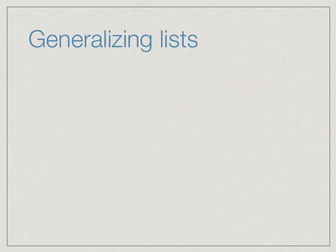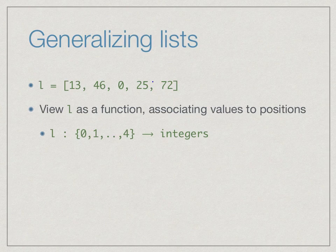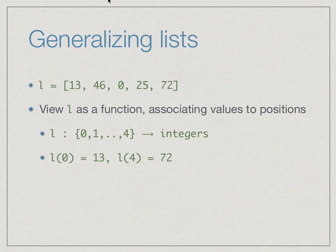Let's go back to lists. A list is a sequence of values with positions associated starting at zero up to length minus one. An alternative way of viewing a list is to say it maps every position to a value. We can consider list l as a map or function in the mathematical sense from the domain {0, 1, 2, 3, 4} to a range of integers — for example, l[0] is 13, l[4] is 72, and so on.